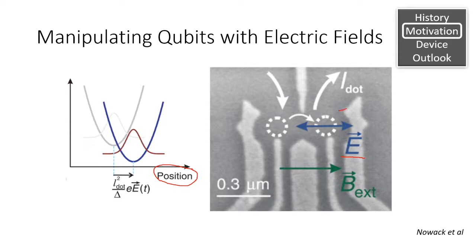Hence, by generating oscillating electric fields, we can cause the electron to move around like so, causing this position to shift according to the strength of the electric field.